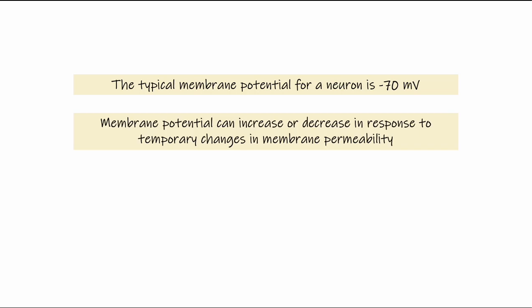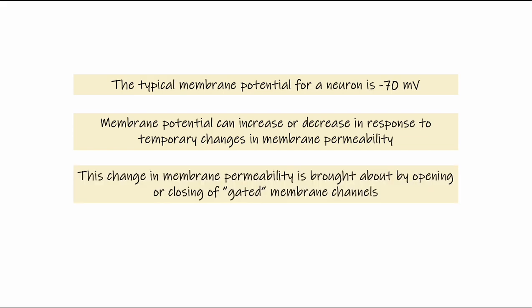We've established that the typical membrane potential for a neuron is about negative 70 millivolts. This membrane potential can increase or decrease in response to temporary changes in membrane permeability.